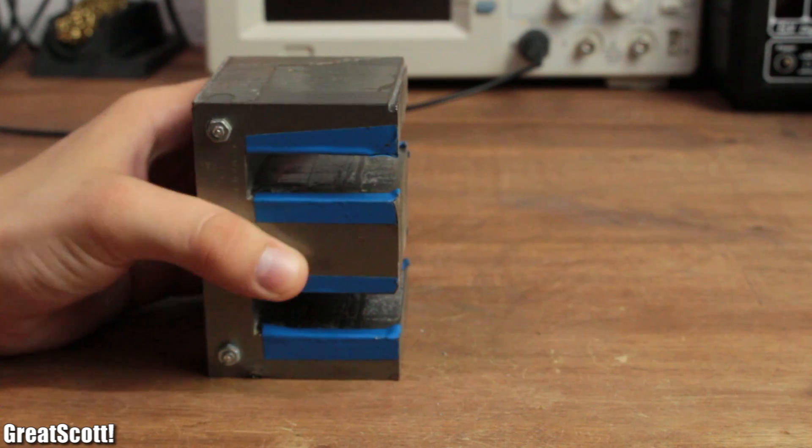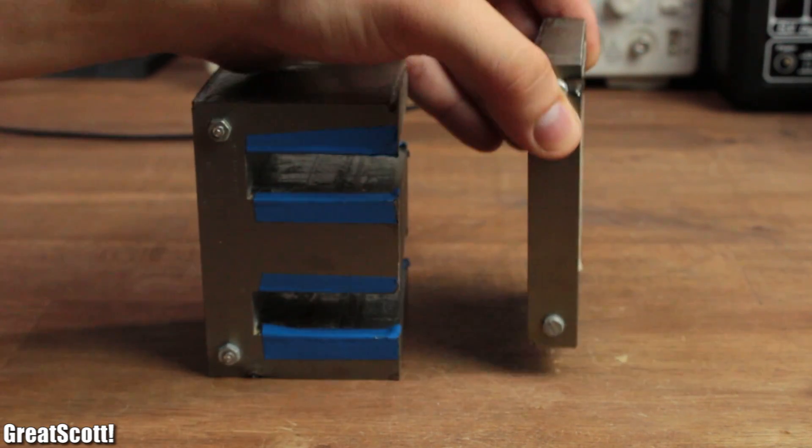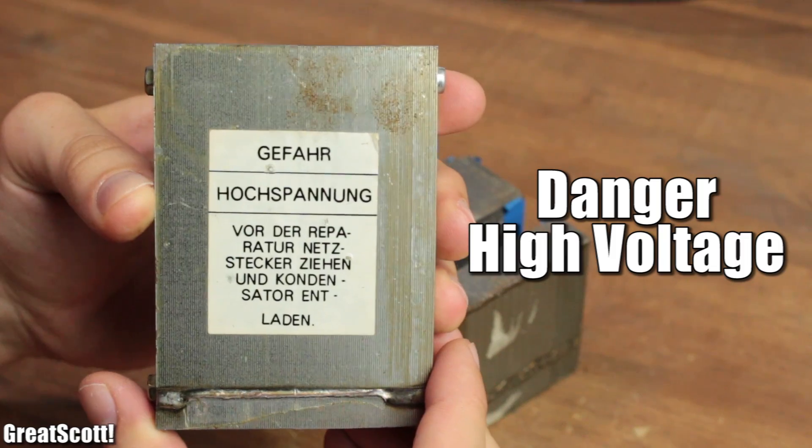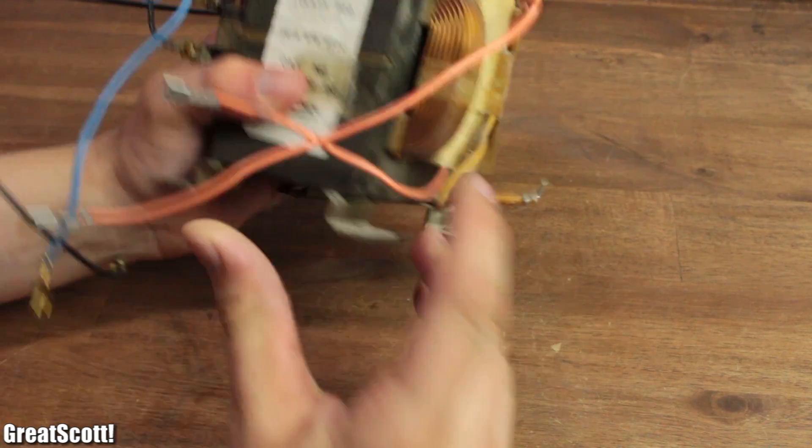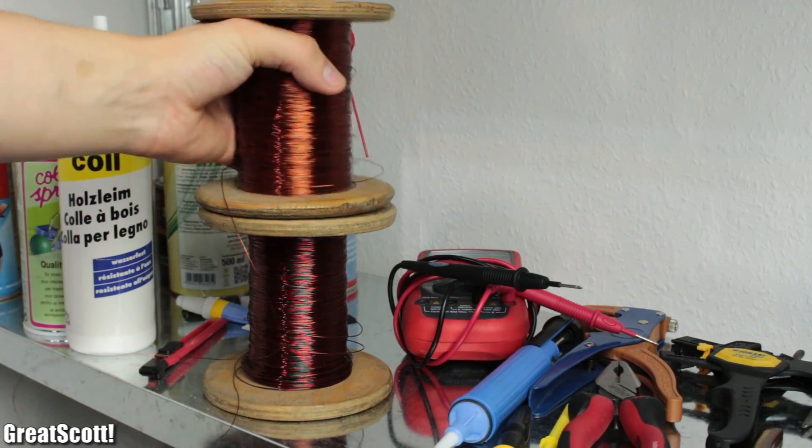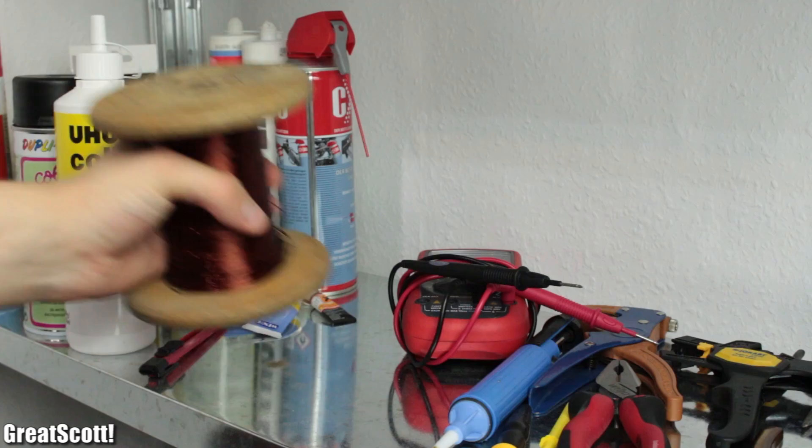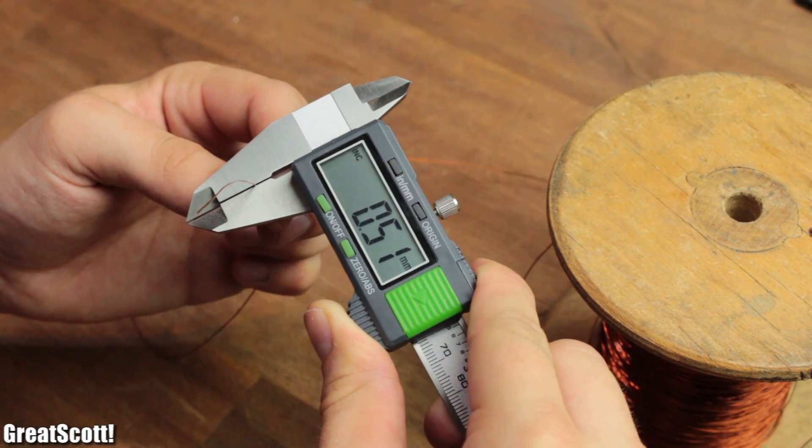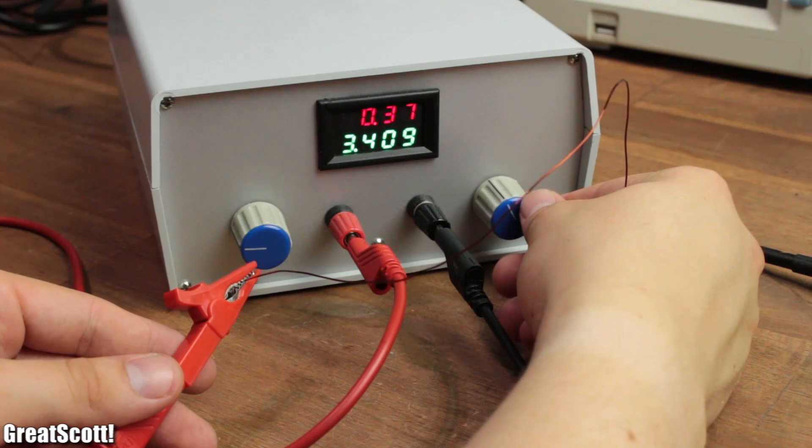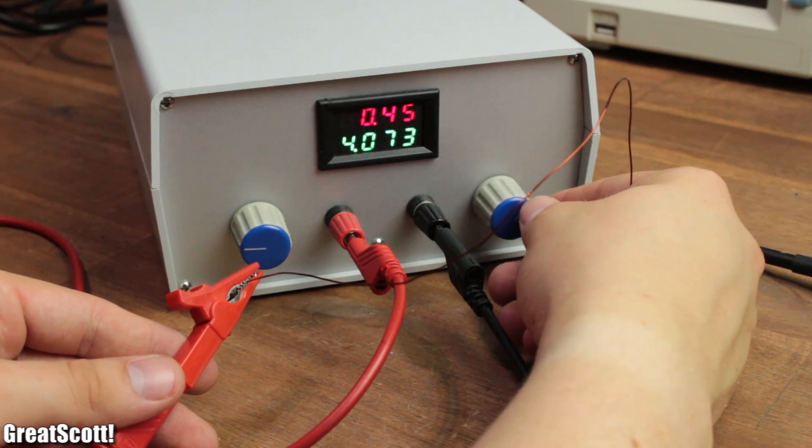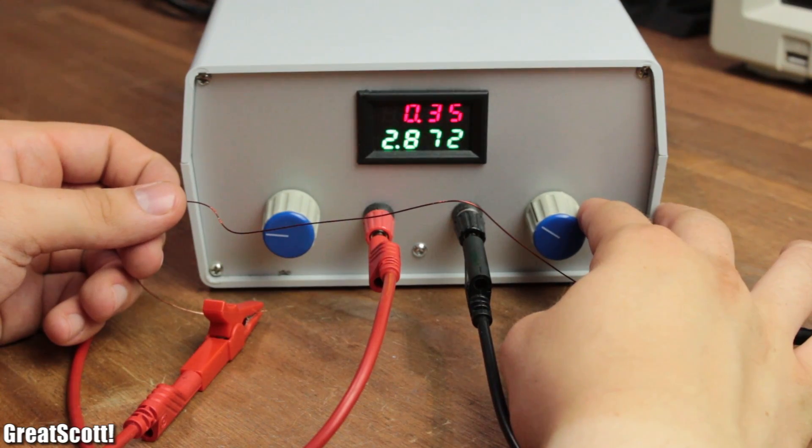I started off with this E and I section of the iron core of an old high voltage transformer that I once salvaged from a microwave. Then I grabbed some 0.65mm and 0.5mm enamel copper wire, which should at least withstand 3 amps for the thicker one and 2 amps for the thinner one.